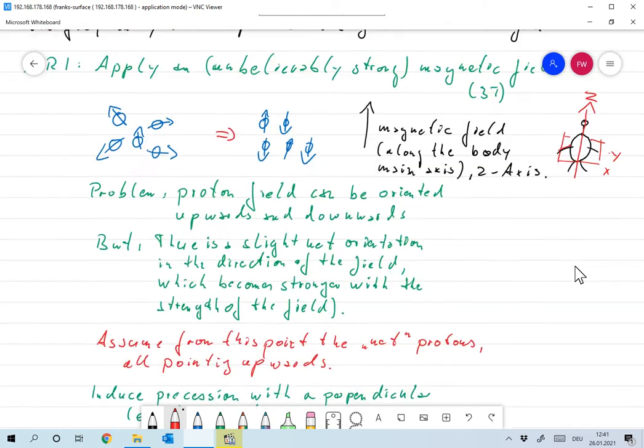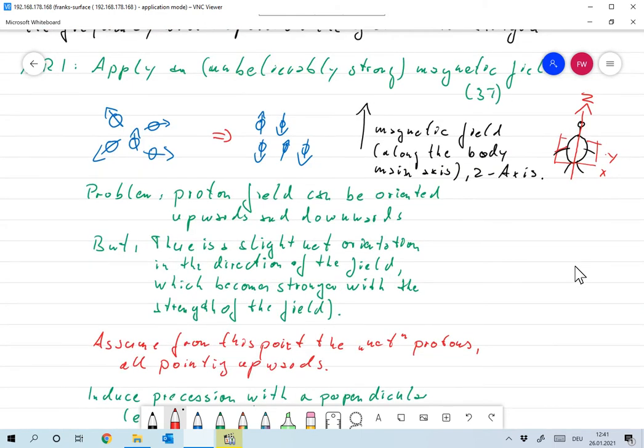And by the way, the question is why do we really want to have that strong magnetic field? Well, the difference between the up-going and down-going protons will be proportional to the strength of the field. So you have the more of that non-equilibrium, the higher the magnetic field, the stronger the magnetic field is.